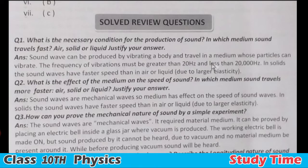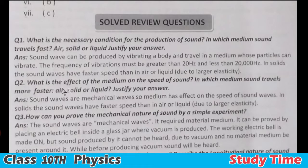The frequency of the vibrations must be greater than 20 Hz and less than 20,000 Hz. The body producing sound must vibrate at a frequency between 20 Hz and 20,000 Hz. In solids, sound waves have faster speed than in air or liquids, due to their large elasticity. So the first part answers necessary conditions, and the second part tells us sound travels fastest in solids.